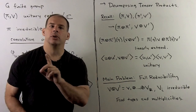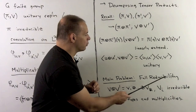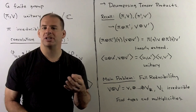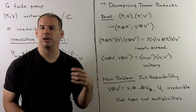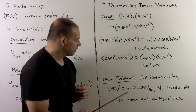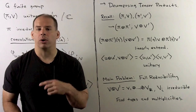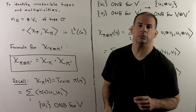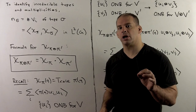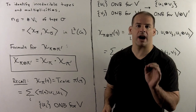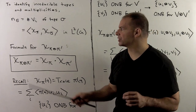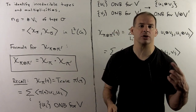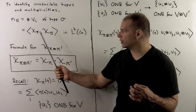Now, the main problem: we have this business of full reducibility, which says if we have any representation on a finite group G, we decompose it into an orthogonal direct sum of irreducible sub-representations. So the problem is to find the types that occur and their multiplicities. If we're only interested in types and multiplicities, we use character theory. The multiplicity of the irreducible sigma is given by taking the inner product of the character of our representation with the character of sigma, using the L2 norm.